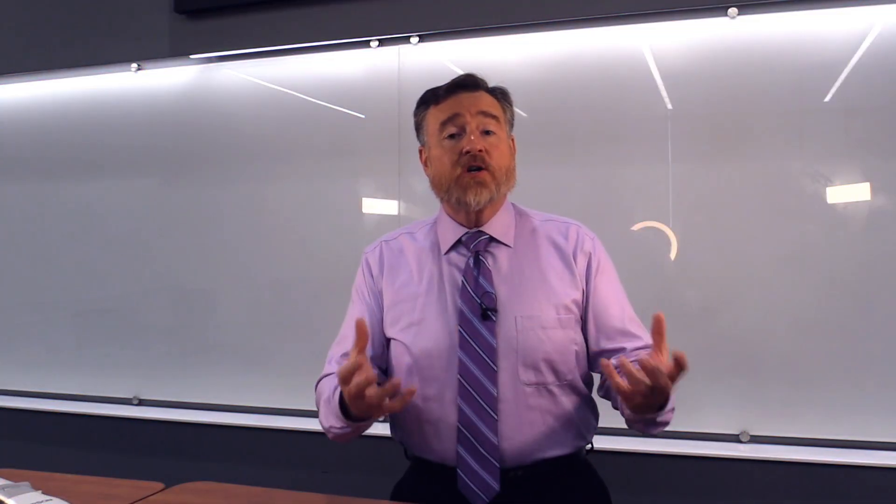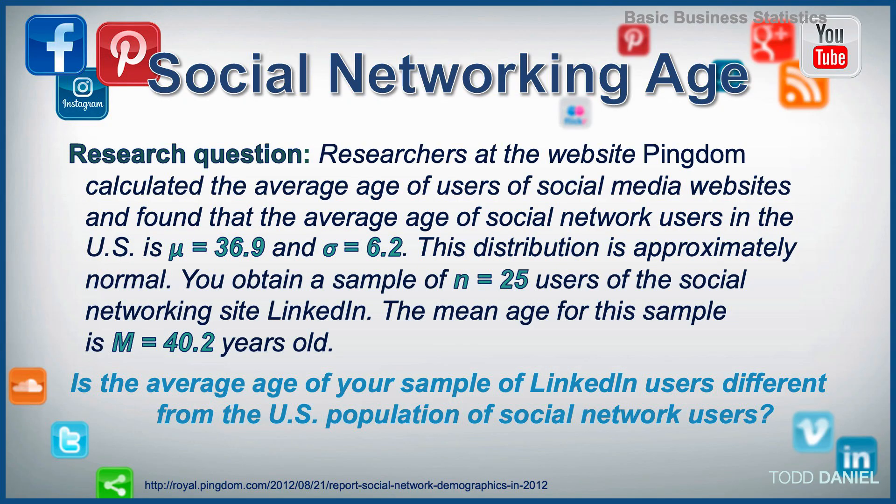Let's structure our research question. Researchers at Pingdom calculated the average age of users of social media websites and found that the average age of social network users in the United States is 36.9 years old, with a standard deviation of 6.2 years. This distribution is approximately normal. You obtain a sample of 25 users of the social networking site LinkedIn. The mean age for this sample is 40.2 years old. Is the average age of your sample of LinkedIn users different from the U.S. population of social network users? We will answer that question using our one-sample z-test.